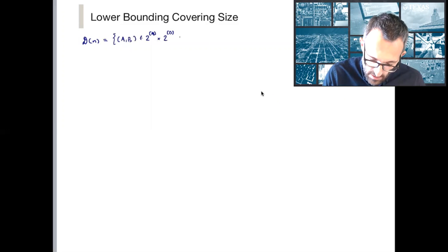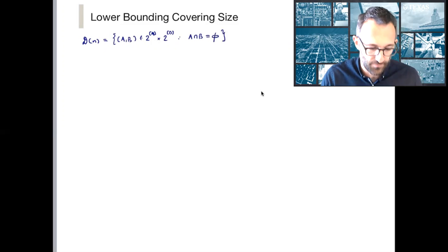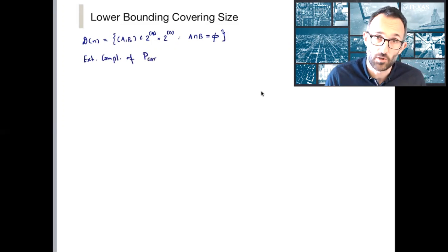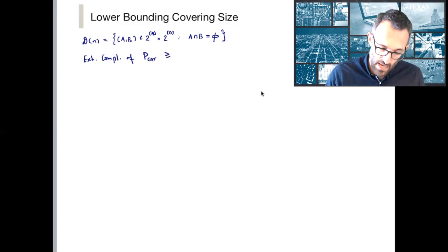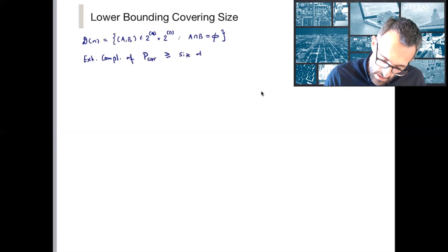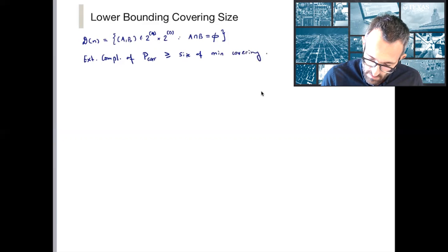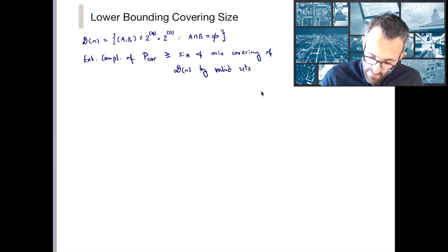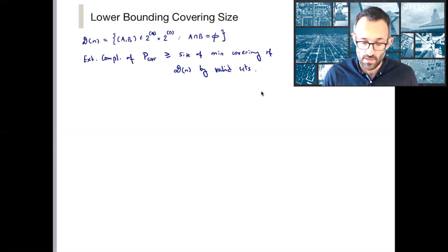So this is our set. D(n) is the set of all (a, b) such that a and b have empty intersection. In the previous lecture we showed that the extension complexity of the correlation polytope upper bounds the size of a minimum-size covering of D(n) by what we defined as valid sets.